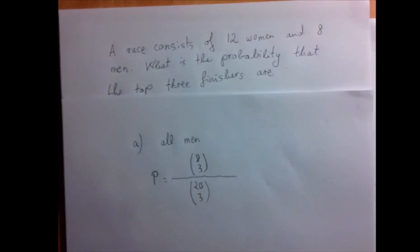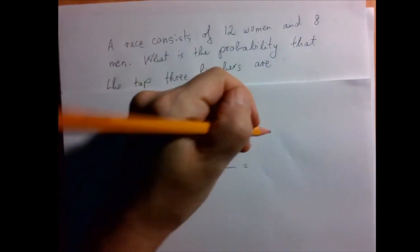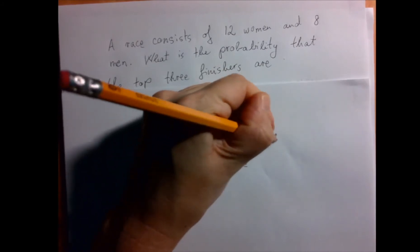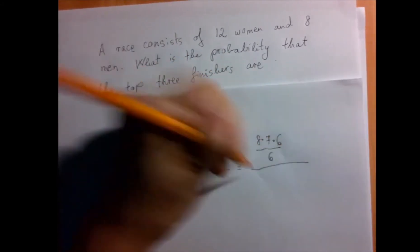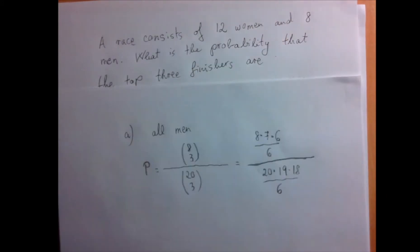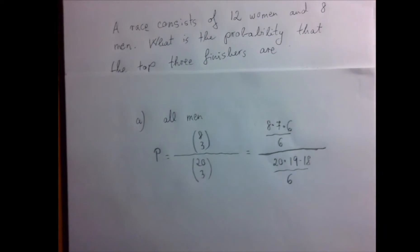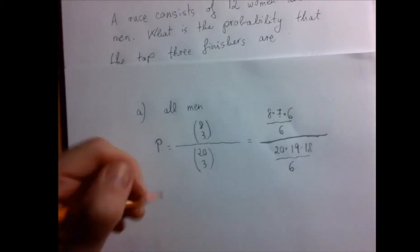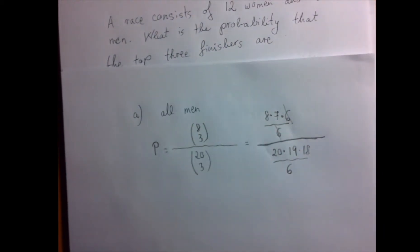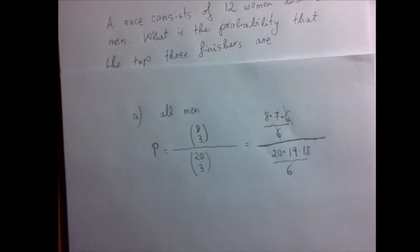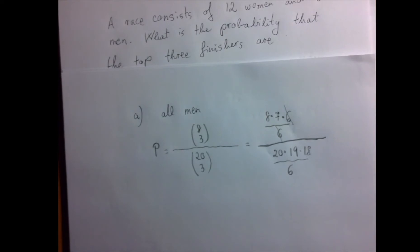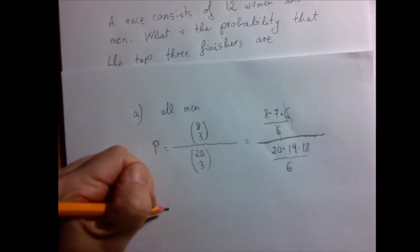So the rest is just computational. 8 choose 3 is 8 times 7 times 6 divided by 6. And we divide that by 20 times 19 times 18 divided by 6. Now to divide is to multiply by the reciprocal. Let's cancel out this 6. For the rest of the computation, the idea is that it's easier to simplify fractions in a factored form, because we can recognize the common factors easier.